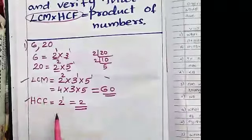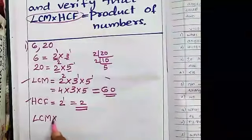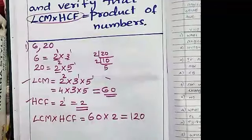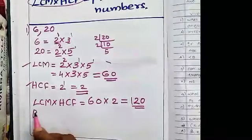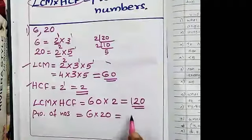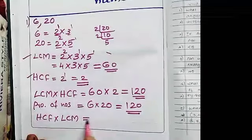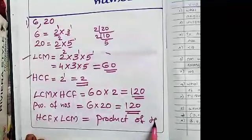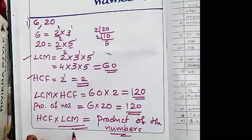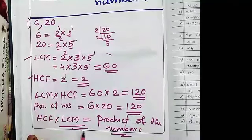Now we are going to prove that LCM into HCF equals the product of the numbers. LCM into HCF equals 60 into 2, which is 120. The product of the numbers 6 and 20 is also 120. So we have proved HCF into LCM equals the product of the given numbers. Note that this idea applies for 2 numbers only; if more than 2 numbers are given, this idea is not correct.